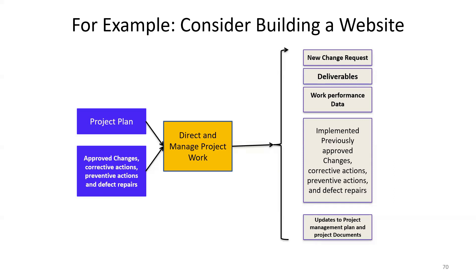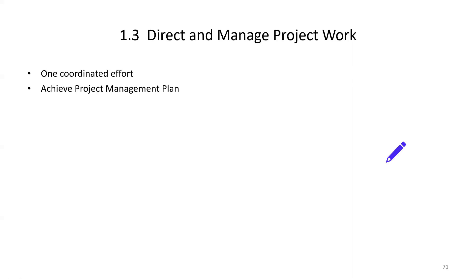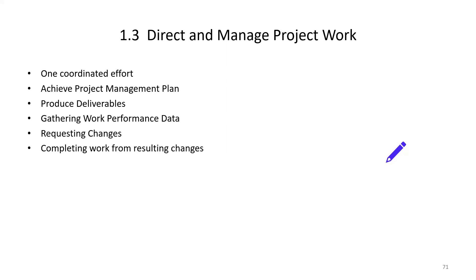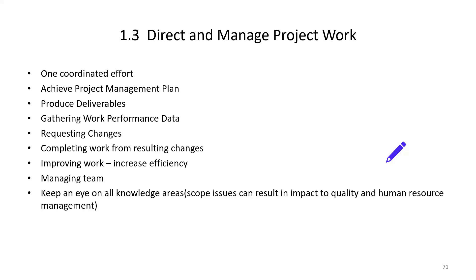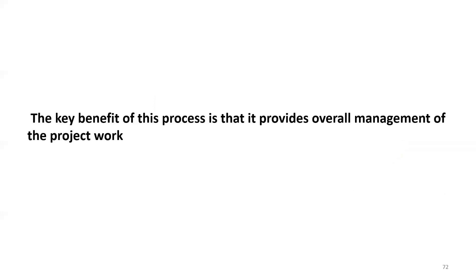To summarize, Direct and Manage Project Work is a coordinated effort to deliver the project based on the project management plan. You produce deliverables, gather work performance data, request changes, complete work resulting from changes, improve work efficiency, improve the skills of the team, and manage the team. Keep an eye on all knowledge areas — scope issues can impact quality and human resource management.